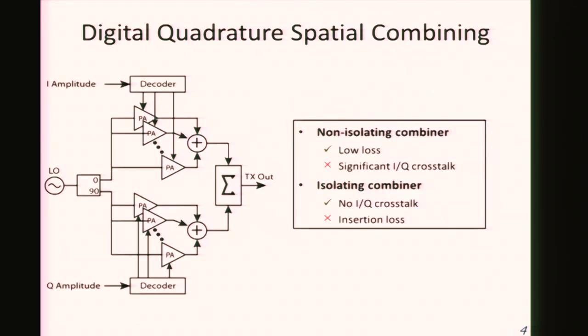In order to use this architecture for transmitting any type of QAM signal, we have to use two such arrays—one for transmitting in-phase signal, the other for transmitting quadrature phase signal. Of course, the biggest challenge is how to design this final stage signal combiner that combines I and Q signals. In general, there are two types of on-chip signal combiners: non-isolating combiners or isolating combiners.